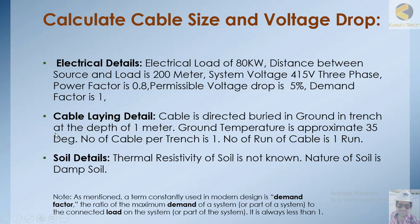The cable installation detail: cable is direct buried in ground in a trench at a depth of 1 meter. Ground temperature is approximately 35 degrees. Number of cables per trench is 1, number of runs per cable is 1. The thermal resistivity of soil is not known and the nature of soil is damp.